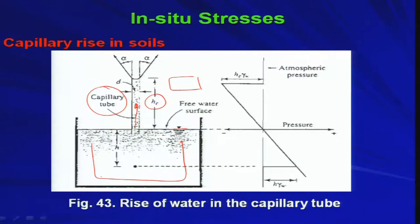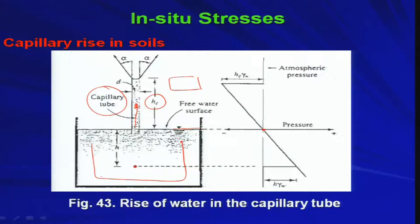From the top free surface of the water, the pressure distribution below the water table is h·γ_w — a linear distribution representing pore water pressure. When you reach the free surface, the pressure is atmospheric. On top of that, due to capillary rise, you will have some suction — some tension — equal to h_c·γ_w, where h_c is the height of capillary rise, which needs to be determined.